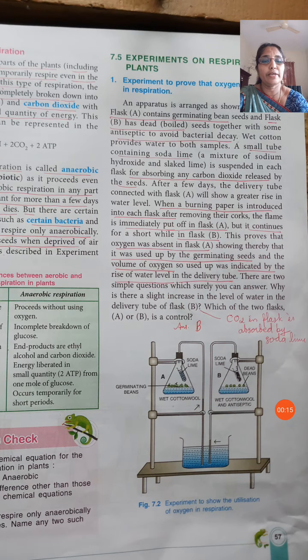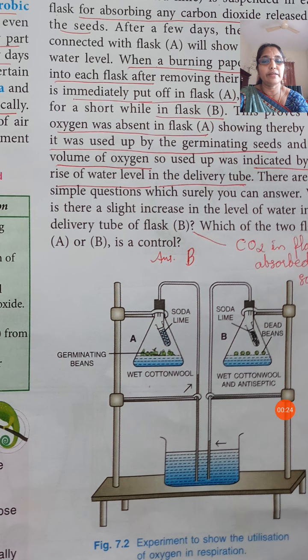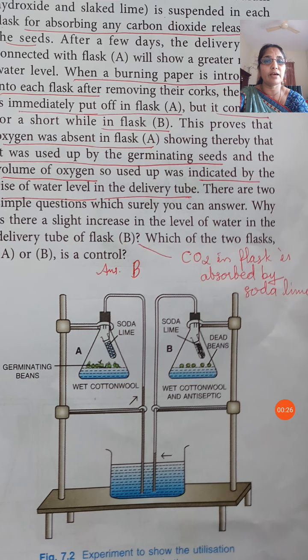Two conical flasks are taken here. One is marked as A, the other B. In flask A, it contains germinating bean seeds. And in flask B, it contains dead bean seeds.